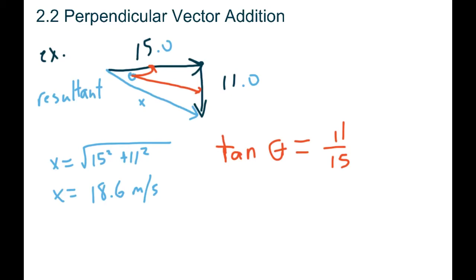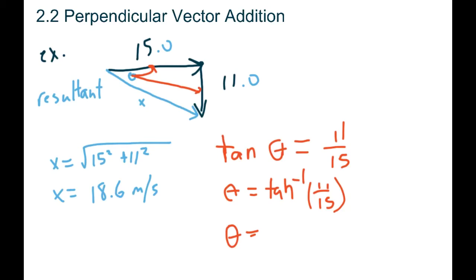So 11 over 15. Remember when you're looking for an angle, you have to do second tan on your calculator. Go second tan, 11 divided by 15, and you should get an answer of 36.3 degrees if we round it off to 3 sig digs.